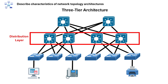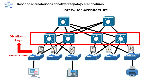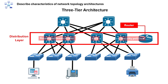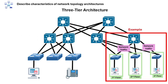The second tier of the three-tier architecture is the distribution layer. Its purpose is to aggregate traffic from access switches and enforce policies. The devices used in this layer are Layer 3 switches or routers. Its functions are routing between VLANs, quality of service, and security policies. An example is a switch that connects all the floor switches and routes traffic between them.